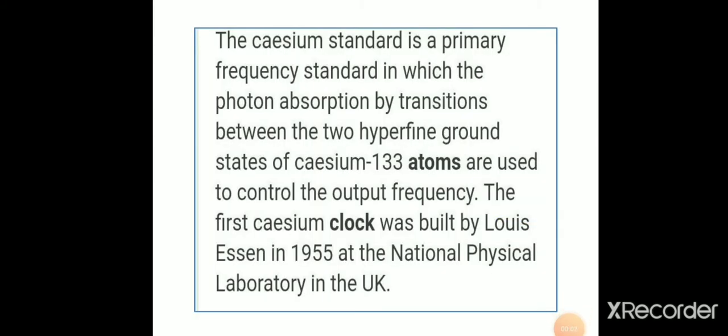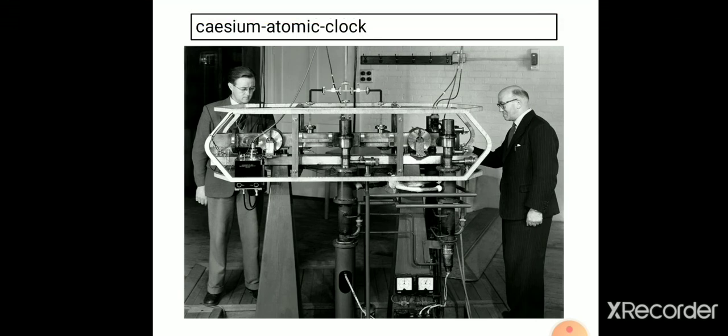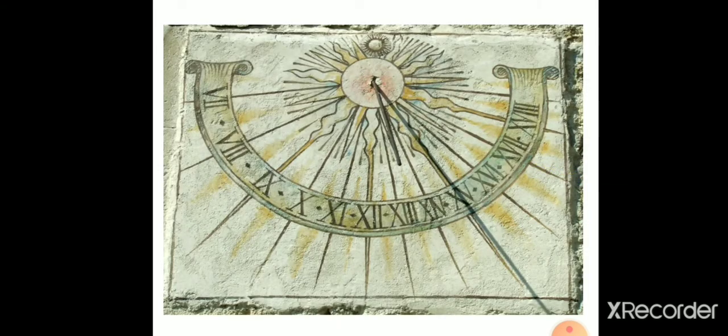The first cesium clock was built by Lewis Essen at the National Physical Laboratory in UK. This is the picture of the cesium atomic clock. This picture shows a cesium clock preserved in the National Physical Laboratory, New Delhi.